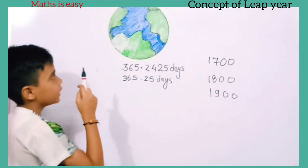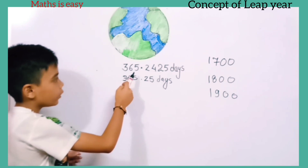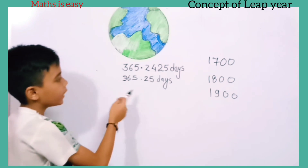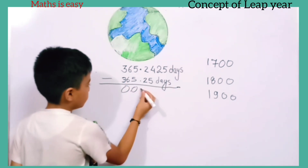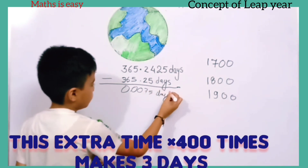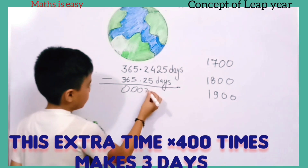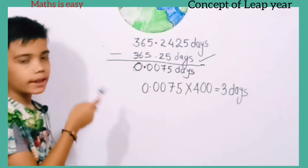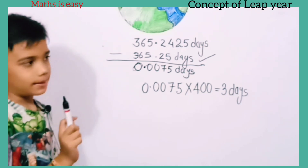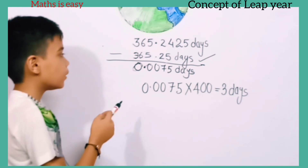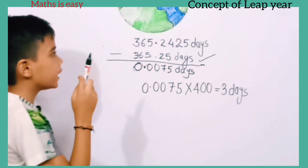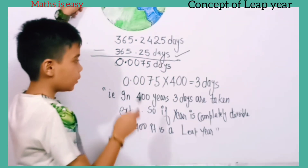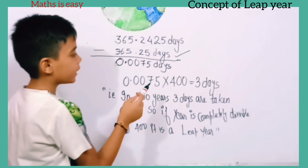The Earth completes one revolution in 365.2425 days, but we consider it 365.25 days. That means we have taken 0.0075 days extra in one year. If we multiply 0.0075 days by 400, we get 3 days.